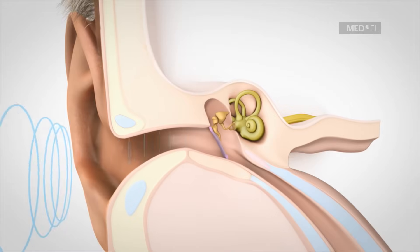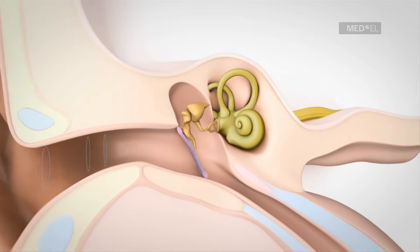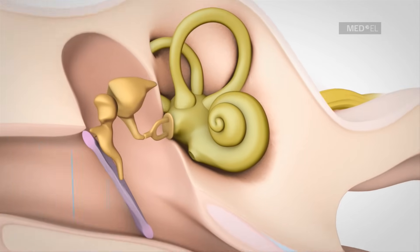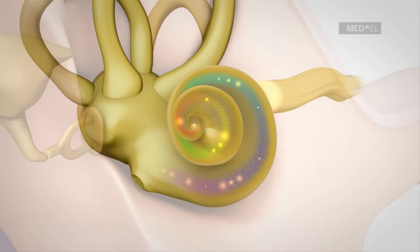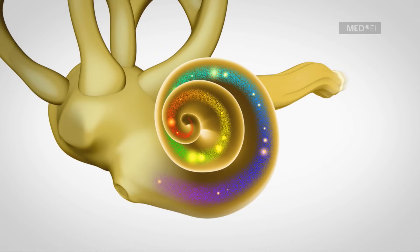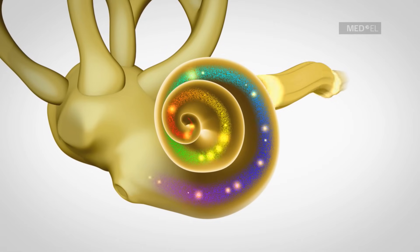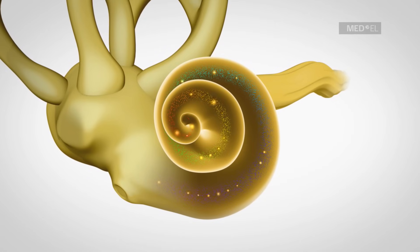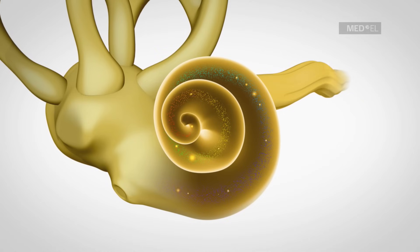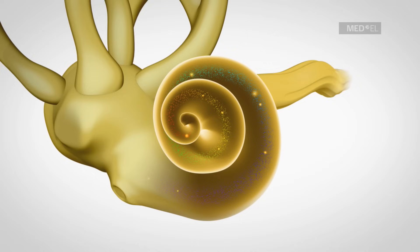A sensorineural hearing loss is the result of a problem in the inner ear. Sensorineural hearing loss occurs when hair cells in the cochlea are missing or damaged. These hair cells are responsible for producing precise electrical signals that the brain needs in order to interpret sound.